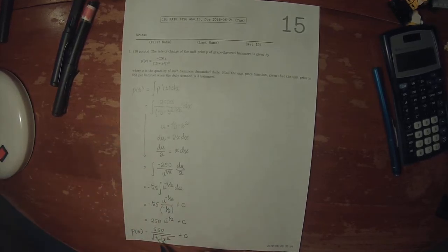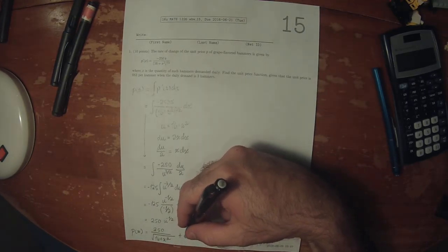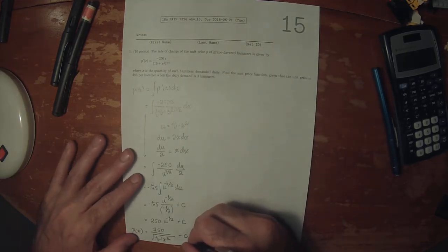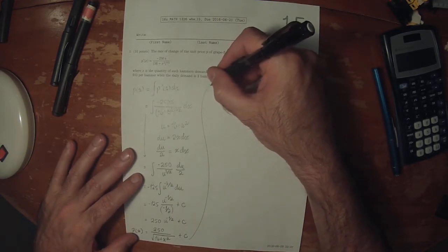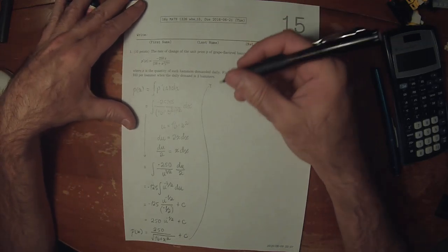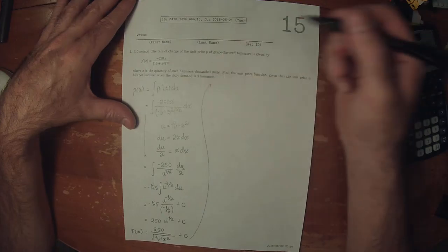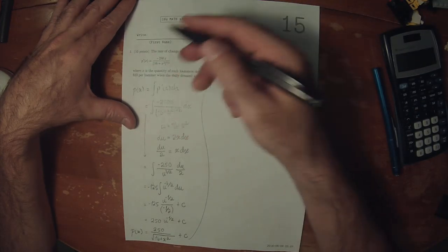So that's the unit price function up to the unknown constant. Now to figure out the unknown constant we'll need to use this extra piece of information. The extra piece of information is saying that when we plug in 3 we should get 83.